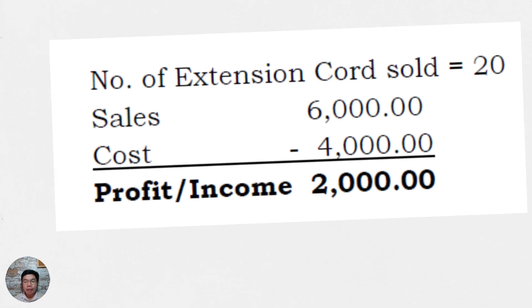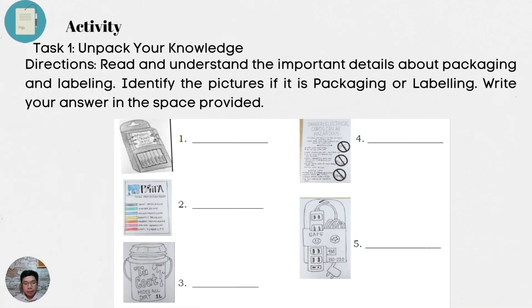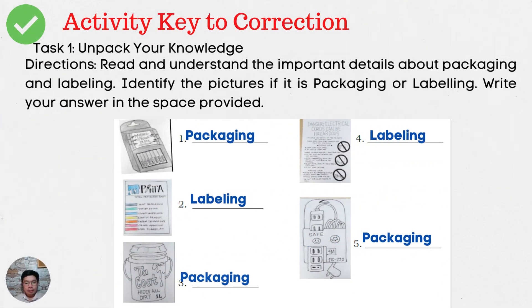Get ready for the next activity. Task number one: Unpack Your Knowledge. Directions: Read and understand the important details about packaging and labeling. Identify the pictures if it is packaging or labeling. Write your answers in your TLE 6 notebook. Let us now check your work. The first picture is packaging. Number two is labeling. Three is packaging. Four is labeling. And number five is packaging.